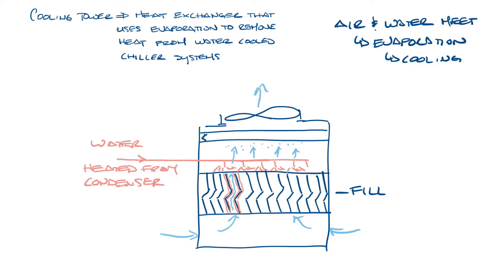As the air with the evaporated water rises it hits this section here called the drift eliminator. This forces the air through the zigzag section which allows the moisture in the air to condense and run back down the sides and be reclaimed by the system.